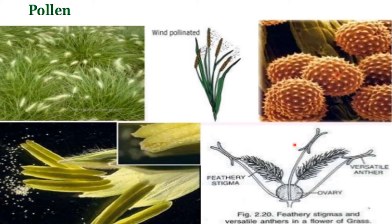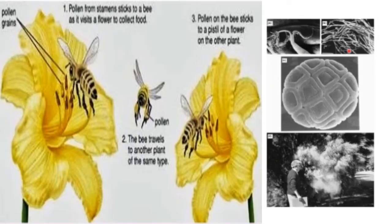Some pollen aggregate into composite structures, such as polyads of Acacia with 4, 8, 16, 32, or 64 genetically identical grains, and the pollen of orchids consisting of hundreds of thousands of grains. Highly sculptured pollen surfaces are characteristic of animal dispersal, whereas wind-dispersed species have smooth pollen surfaces. Pollen surfaces can be sticky, causing grains to clump, and in some species viscin threads hold the grains together — these are generally animal-dispersed. Grains with a dry surface are mostly wind-dispersed.